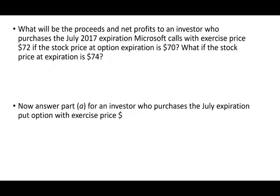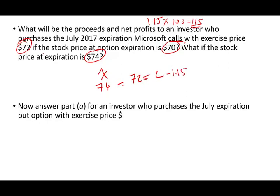What will the proceeds and the net profit be to an investor who purchased the July 27 expiration Microsoft call with an exercise price of $72, if the stock price at expiration is $70? You have no profit whatsoever — you have a loss because you will never exercise the call. You lost $1.15 times 100, so you lost $115. Now if the stock price is $74, you can buy at $72 and sell at $74, making a $2 profit. After paying the $1.15 fee, you have $0.85 left — your net profit — multiplied by 100 shares per contract.